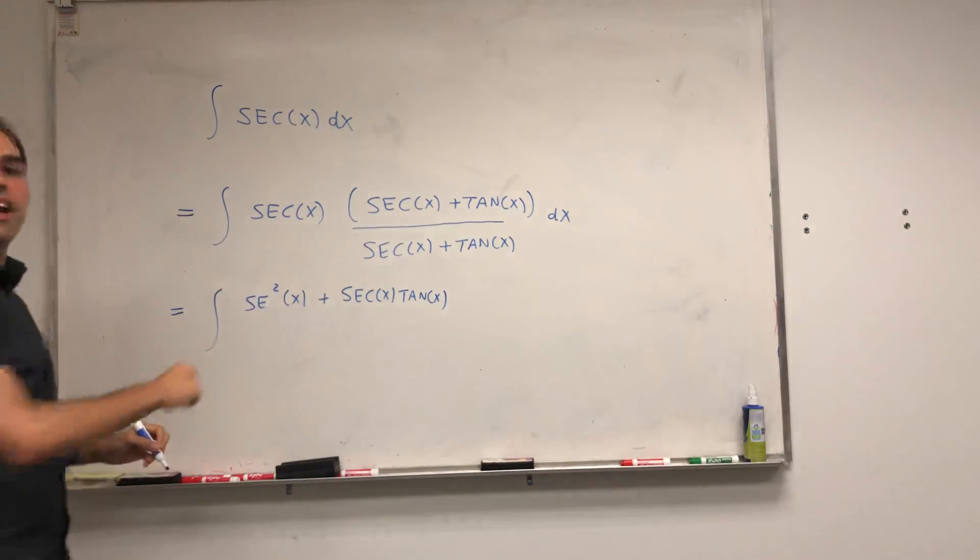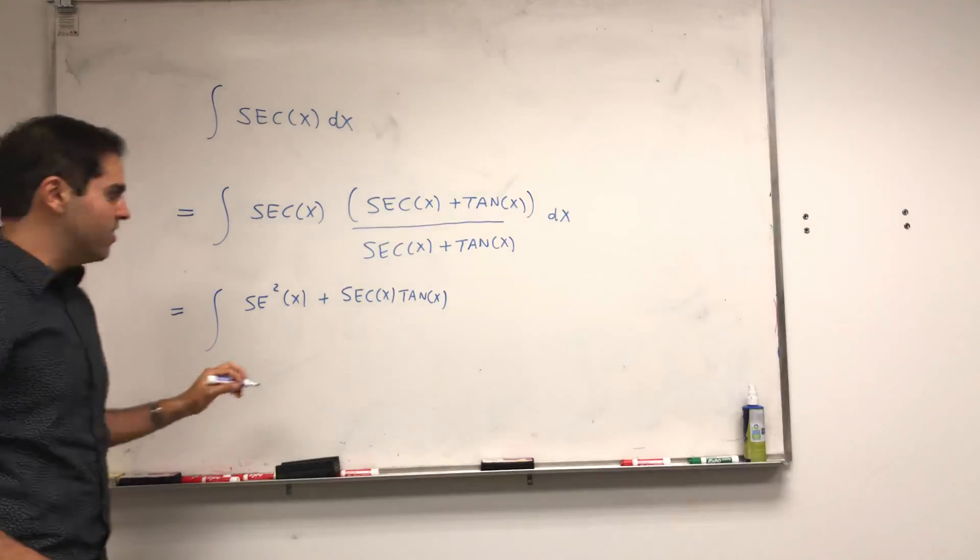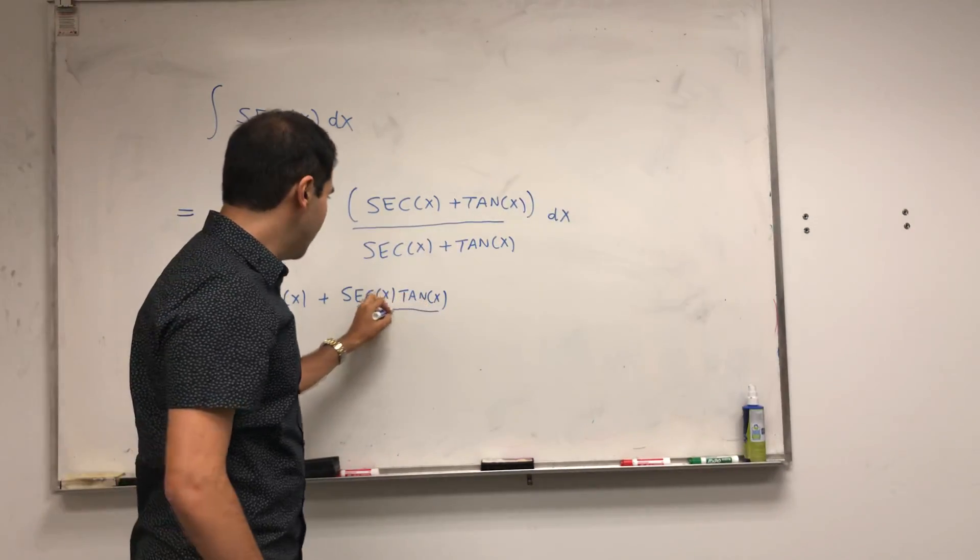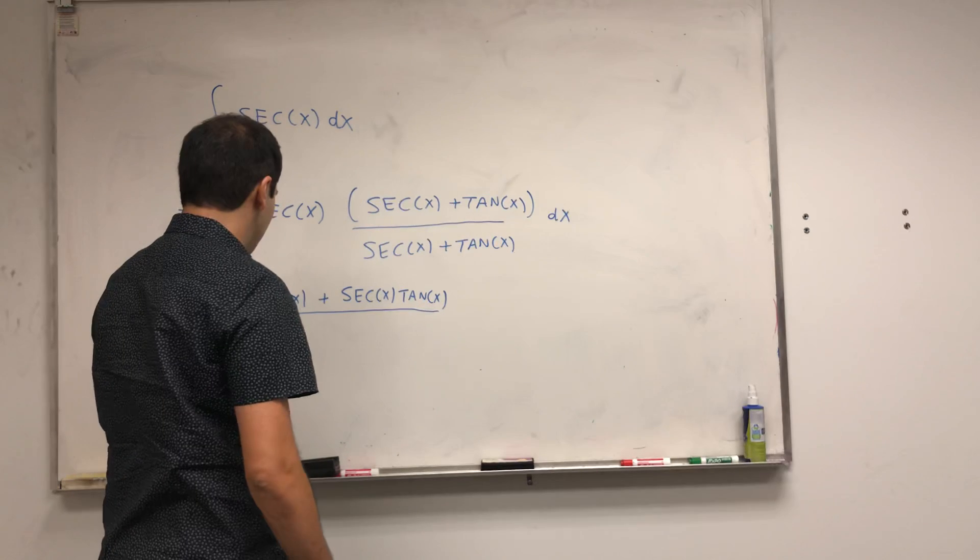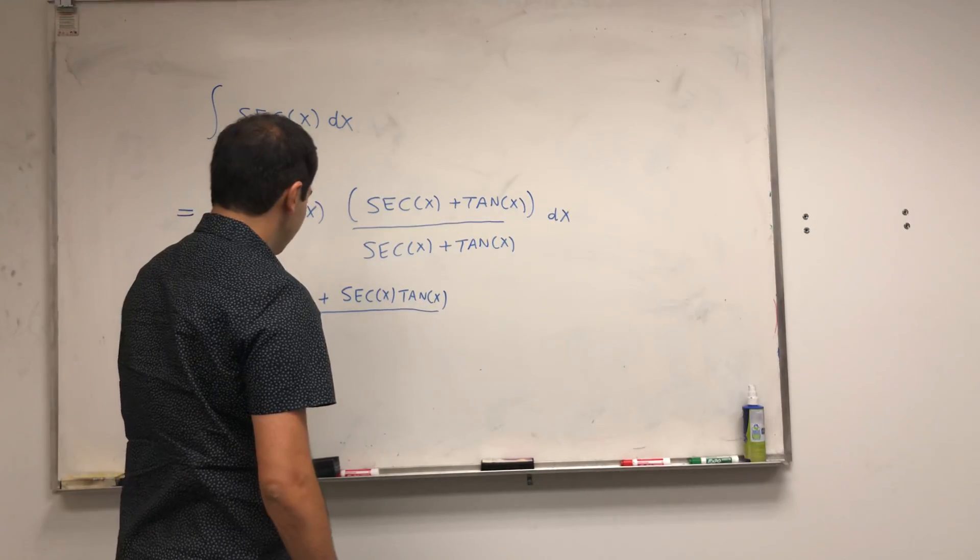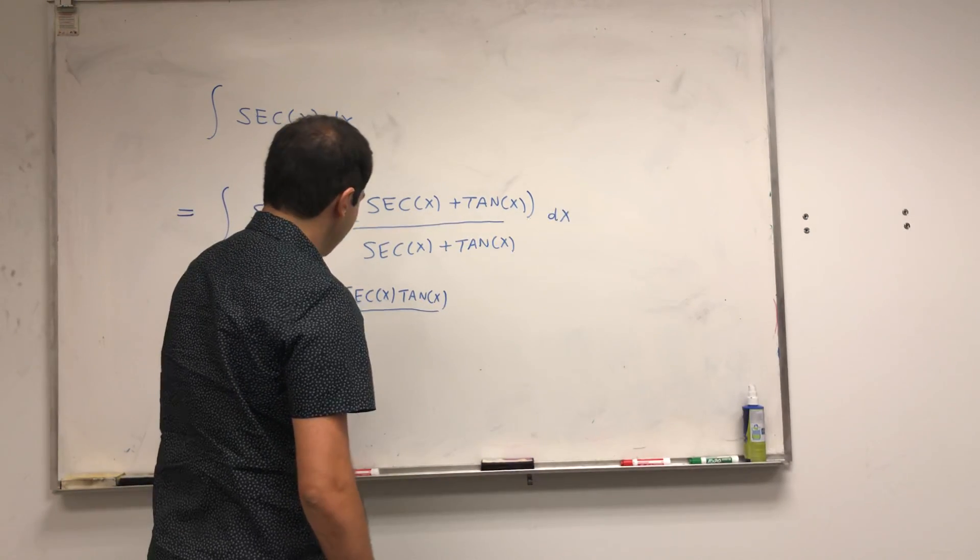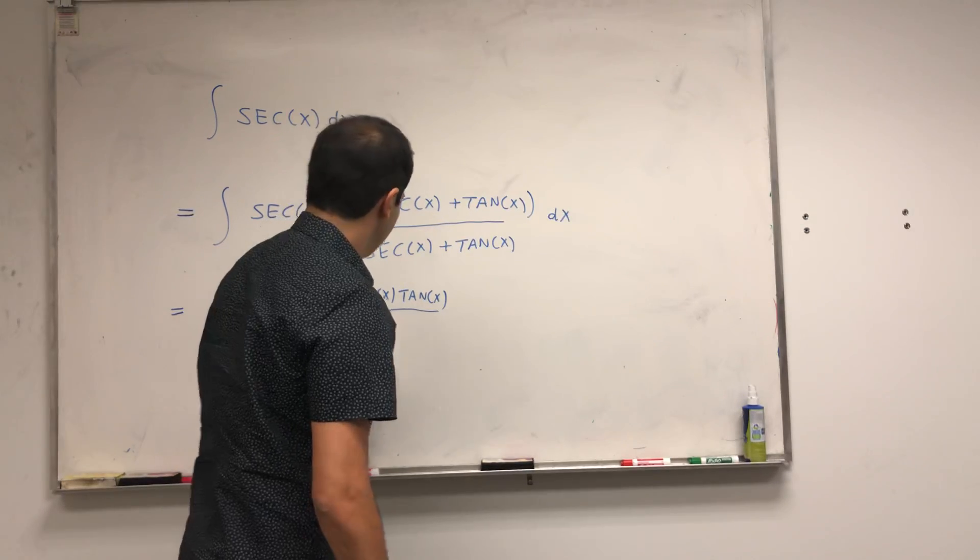That's what you get by expanding out the numerator. And for the denominator, let's just switch the two. So, tangent of x plus secant of x dx.